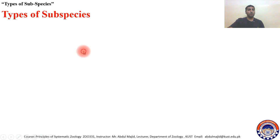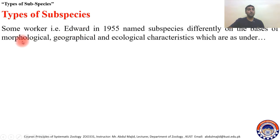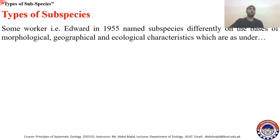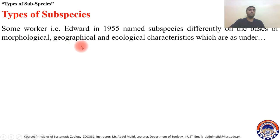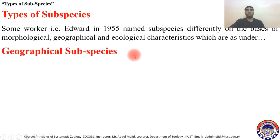Types of subspecies: some workers like Edward in 1935 named subspecies definitively. The basis for their naming were morphological differences, geographical differences, and biological characteristics.